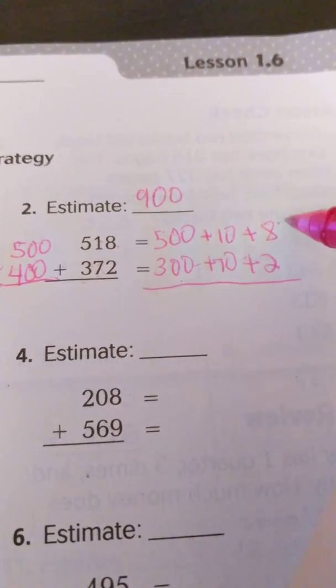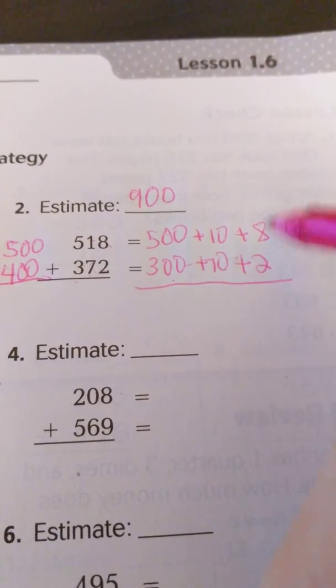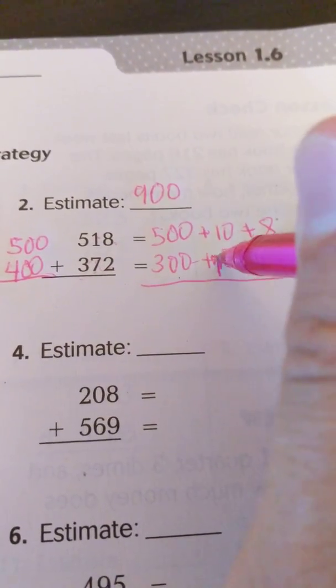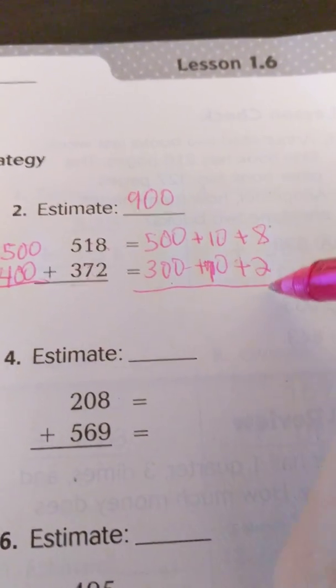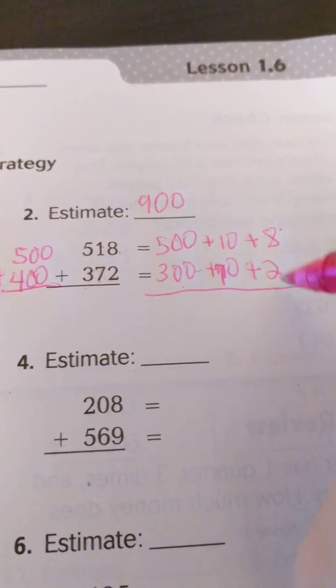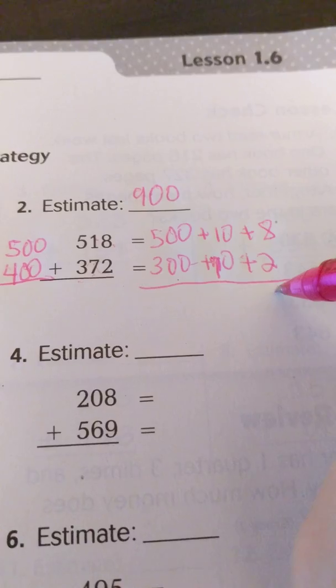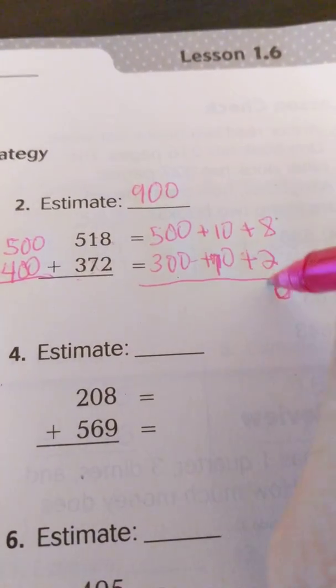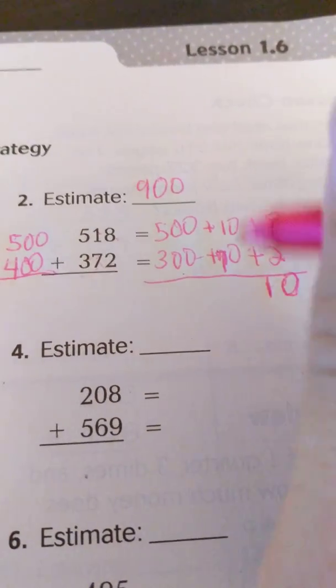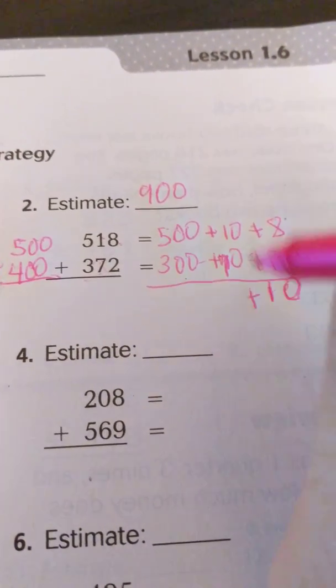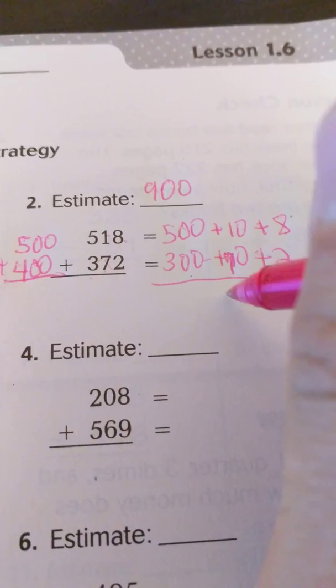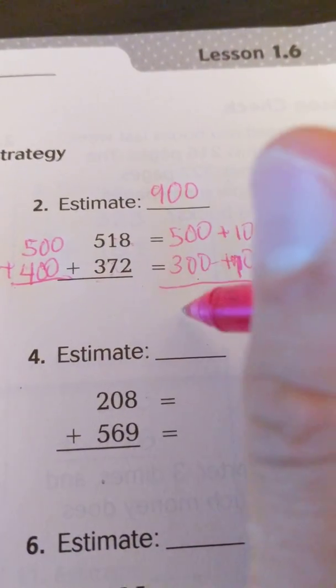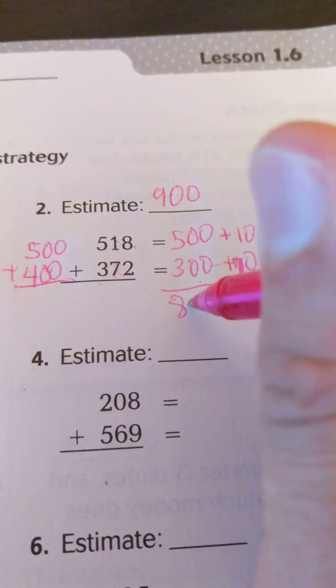Now I'll draw a line here. And then we're going to add, going vertically, and make sure this is clear. This is a 7. So we have 8 plus 2, which is 10. So we're going to go ahead and regroup. Actually, I'm not going to regroup, but I'm going to add 10. I'm going to make it like that. Then 10 plus 70 is 80. Then 500 plus 300 is 800.